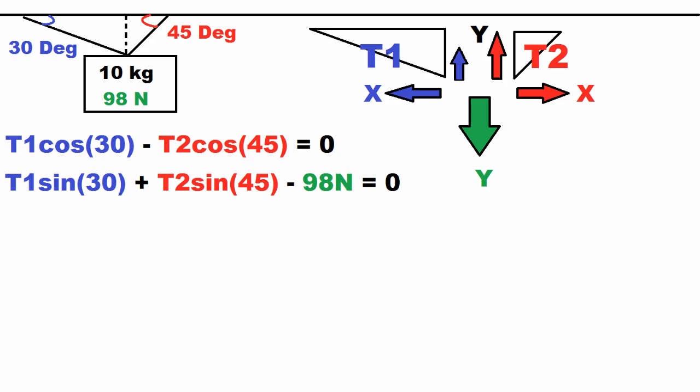Then if we look in the y direction, the two tension forces going in the y direction minus the 98 newtons equals zero. Or tension 1 sine 30 plus tension 2 sine 45 minus 98 newtons equals zero. If you don't understand why I'm using sine and cosine, review SOHCAHTOA.